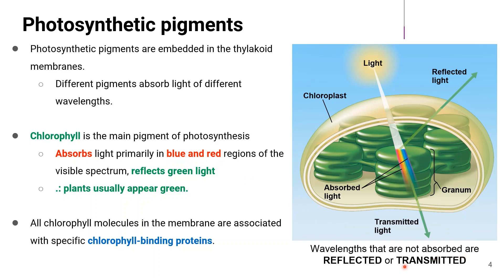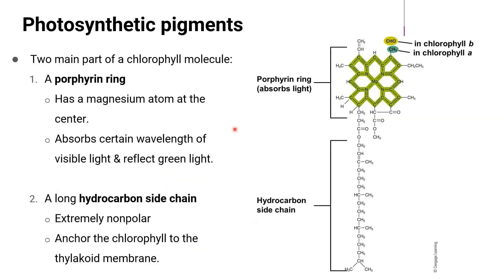Wavelengths that do not fall in these color regions are reflected or transmitted. All chlorophyll molecules in the membrane are associated with specific chlorophyll-binding proteins. There are two main parts of a chlorophyll molecule: a porphyrin ring, which is the part that absorbs light and has a magnesium atom at the center. The porphyrin ring absorbs certain wavelengths of visible light and reflects green light. Looking at the porphyrin ring's chemical structure, what makes chlorophyll become chlorophyll A or chlorophyll B is based on these chemical structures.